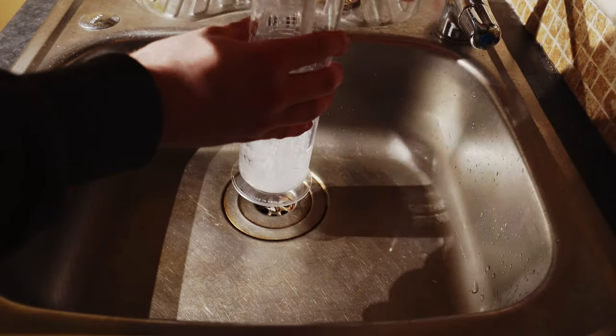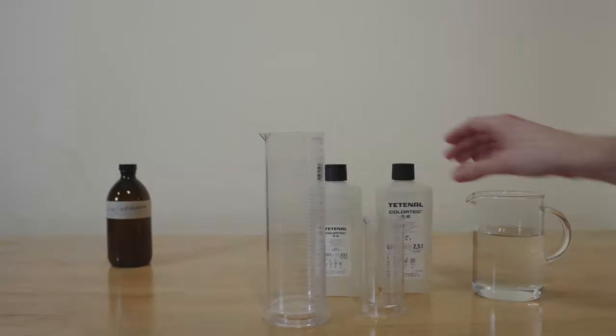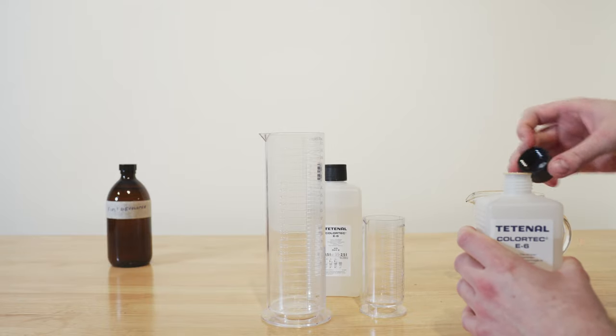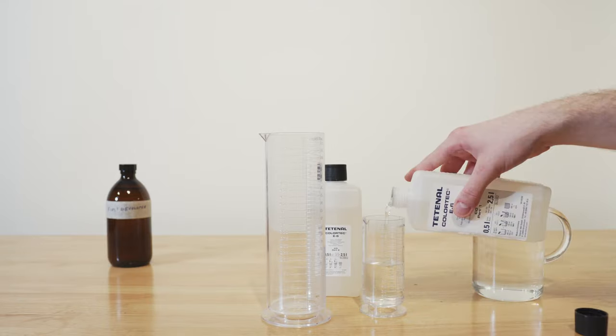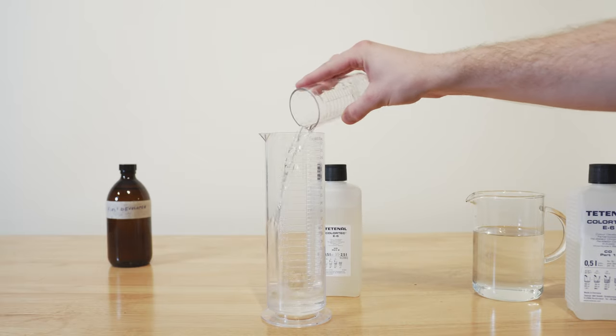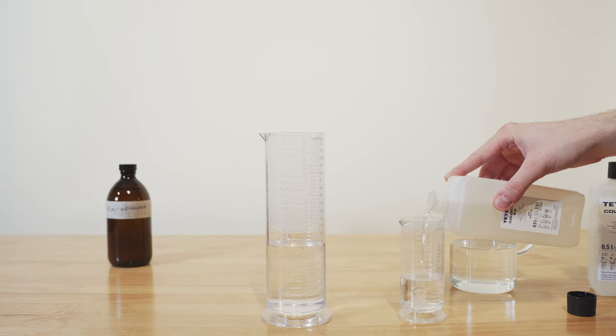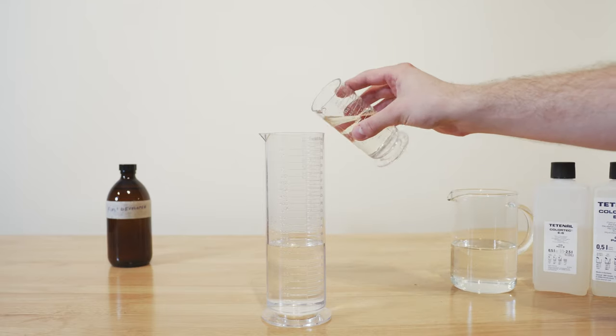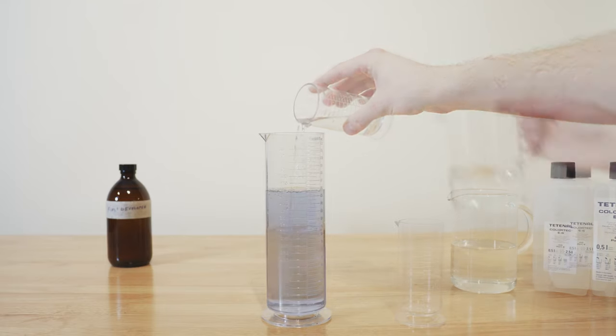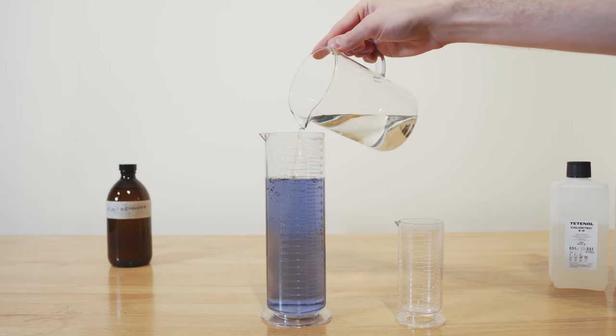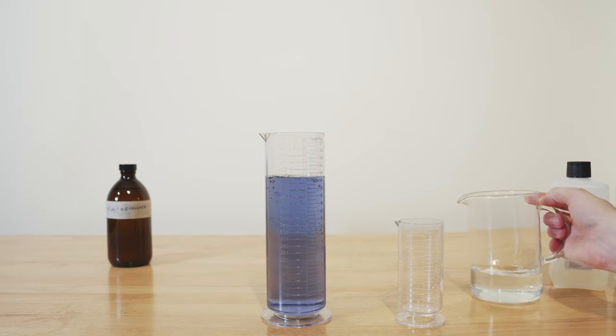The color developer comes in two parts, and in order to mix this we have to use 100ml from each part. So we pour 100ml from part A into the big cylinder, pour across some washings, then we measure out 100ml of part B, pour it into the bigger cylinder, pour across some washings, and then we fill it up to 500ml. When mixed correctly, the color developer will take on a nice deep blue.